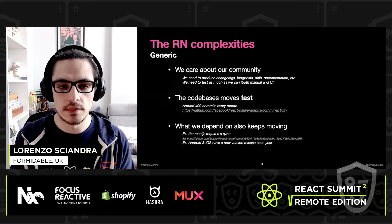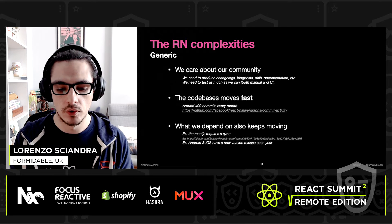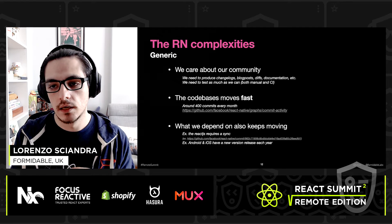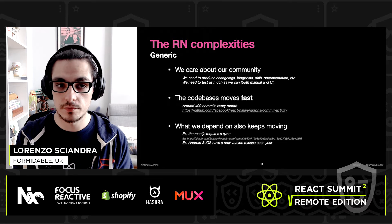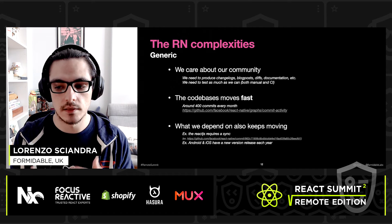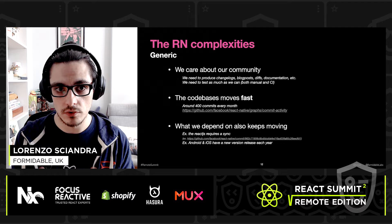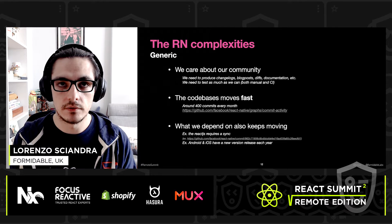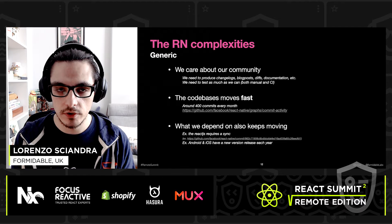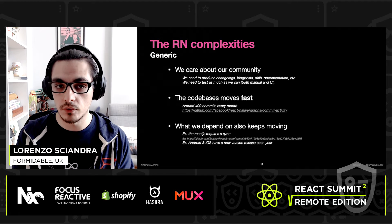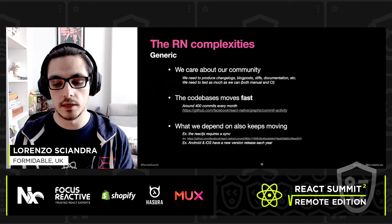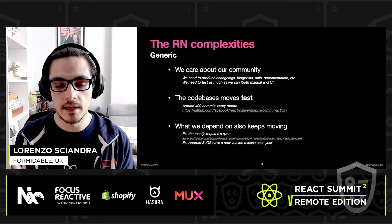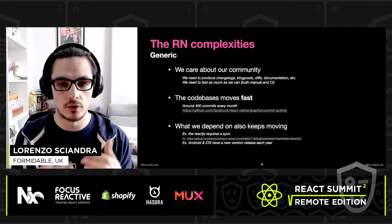The first kind is related to things that happen in any medium-to-large open source project — these are generic complexities most of us doing open source may face. For example, caring about the community: whenever you do a release, you also want to produce material so that developers using your library can actually consume it well.